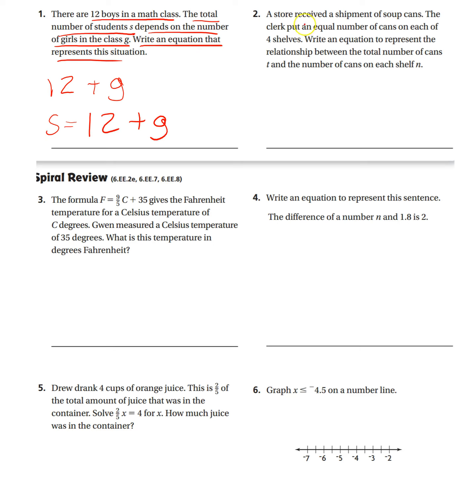Okay, a store received a shipment of soup cans. The clerk put an equal number of cans on each of the four shelves. Write an equation to represent the relationship between the total number of cans, T. So that's going to be my total number of cans, and the number of cans on each shelf, n.